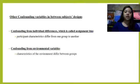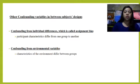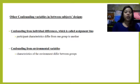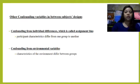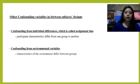Other confounding variables in between-subject design: first is confounding from individual differences, called assignment bias, where participant characteristics differ from one group to another — for example, if one group is taller or smarter than the other. Next is confounding from environmental variables, where characteristics of the environment differ between groups — for example, if the first group is tested in the morning and the other group is tested in the evening, creating environmental differences.